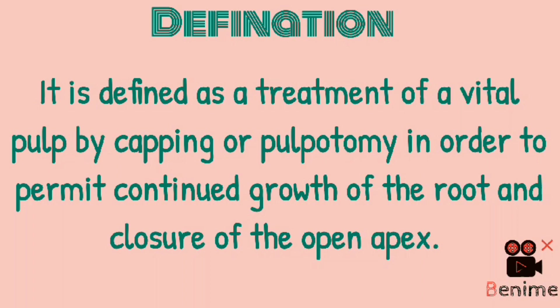This means the tooth has to be vital, which may be infected or inflamed — basically the tooth has to show signs of reversible pulpitis. The next part: in order to permit continued growth of the root and closure of the open apex. So why we perform apexogenesis — this treatment of vital pulp not only results in apical closure but also allows continuous growth of the root till the apex.